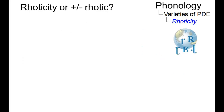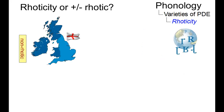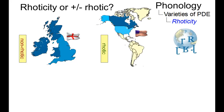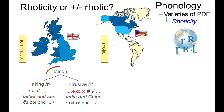Mostly, the varieties of English are classified as non-rhotic — for example RP — or rhotic, for example Standard American English. However, even in the so-called non-rhotic varieties, there are contexts in connected speech where the R can optionally be inserted. Such effects are referred to as liaison.